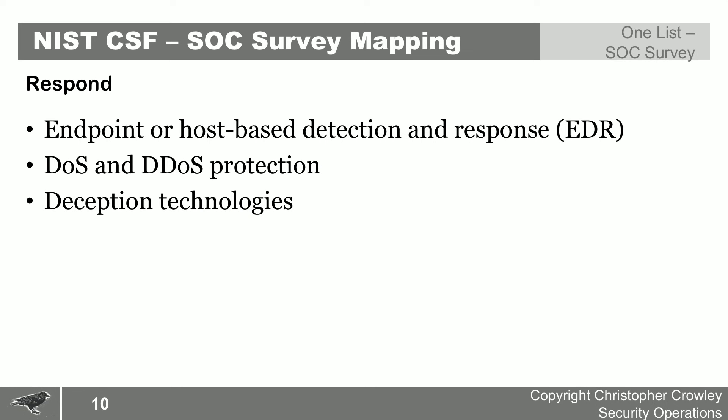The Response category is fascinating — there actually isn't a lot of technology specifically directed at response. Deception appears in both detection and response: you can drop a suspect system into a different VLAN and let it interact with fake systems for containment. DDoS response involves upstream scrubbing products, and endpoint agents can take action to contain a running process.